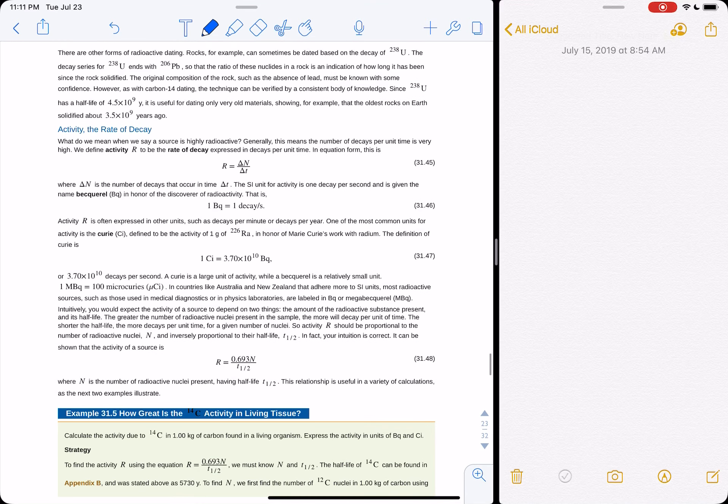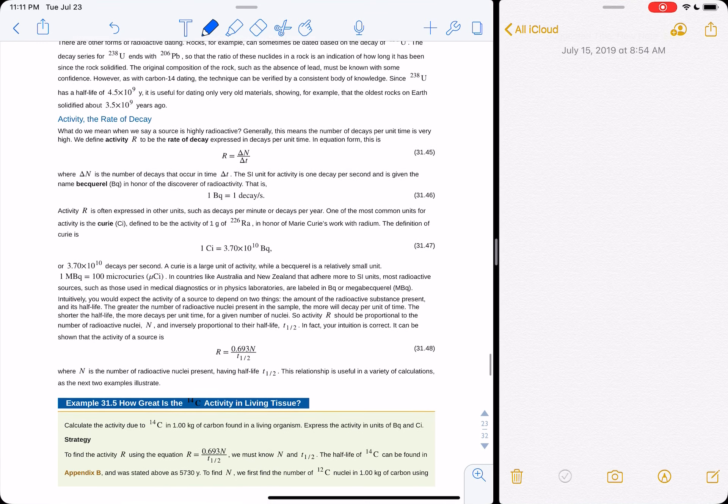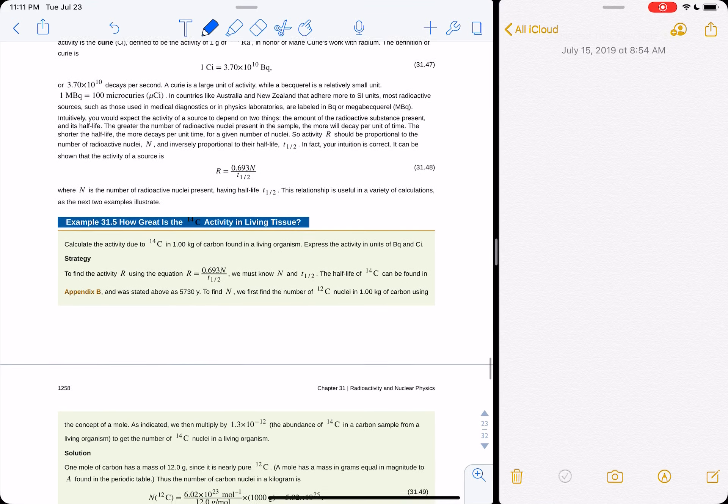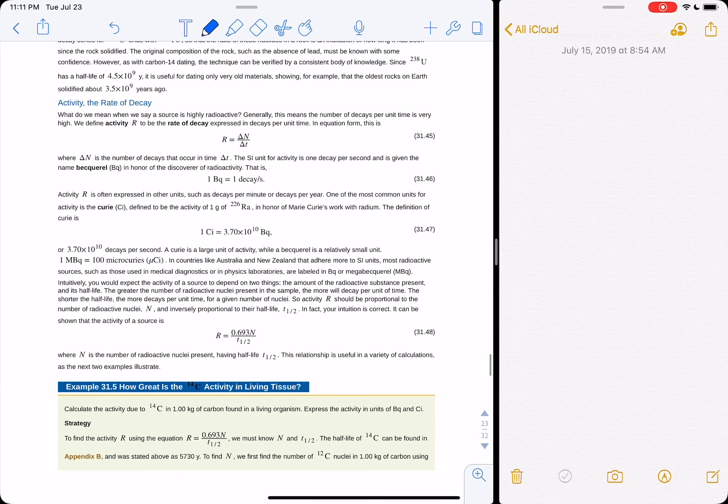Let's see. Da-da-da. Yeah, so the activity of a source is how many decays it has per second. So the rate of decay is just number of decays per time. That's it.